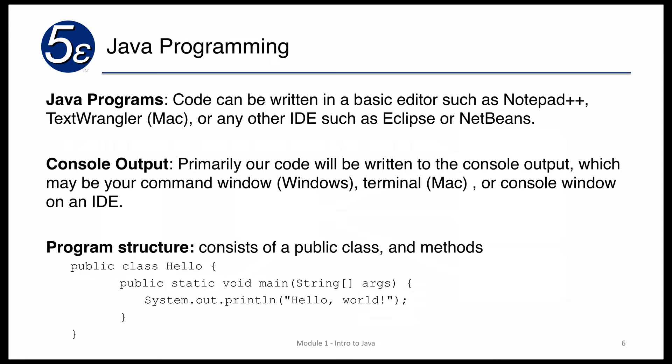The console output is primarily where our code runs. If you're familiar with a command prompt or terminal on a Mac, we'll execute the code there and you will see the output. When we get to things such as applets and graphical user interfaces, it will run a window very similar to what you'd notice as a Windows window or a Mac window.